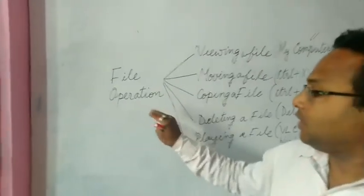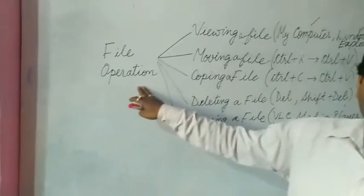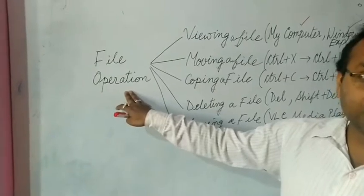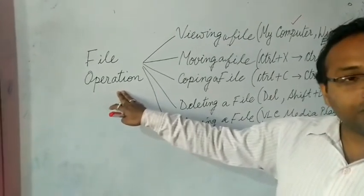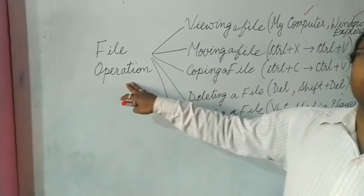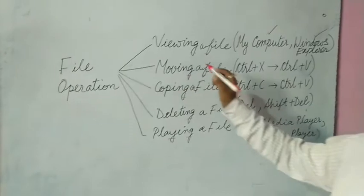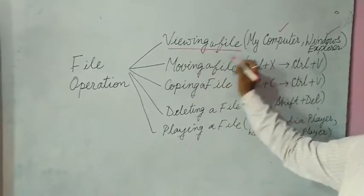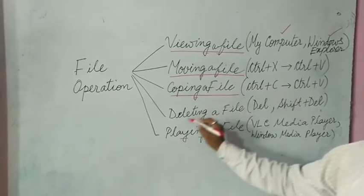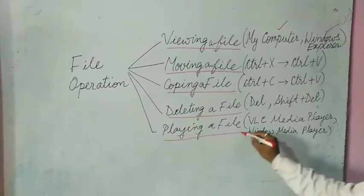File operations refer to the different operations or functions that can be done with files present in your computer regarding their access, storing, or keeping them in some other place. The different file operations are: viewing a file, moving a file, copying a file, deleting a file, and playing a file.